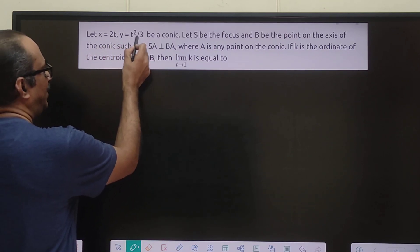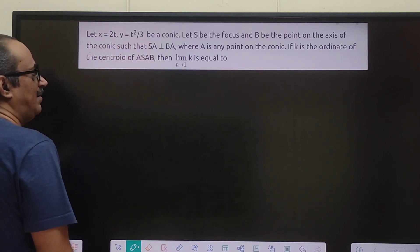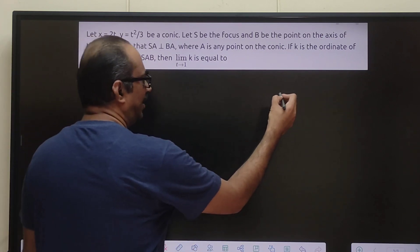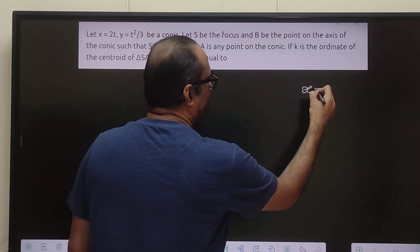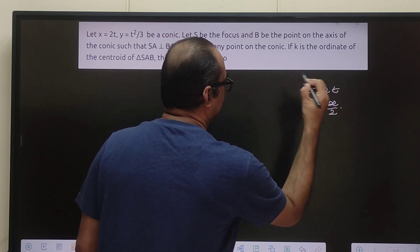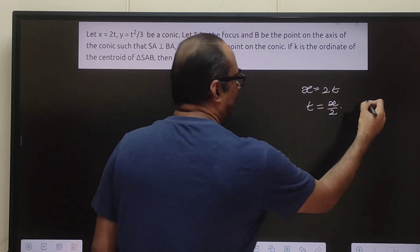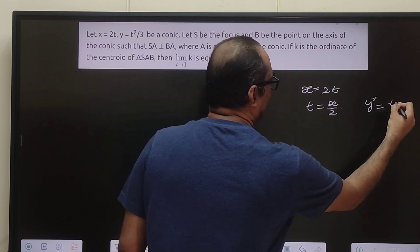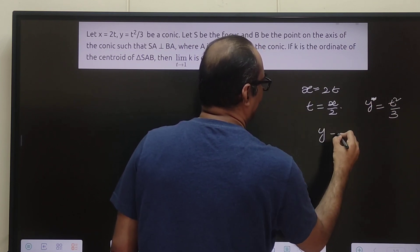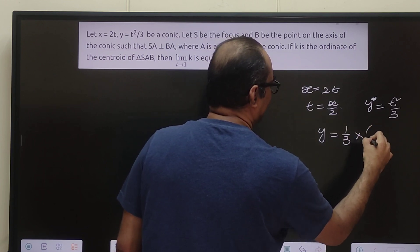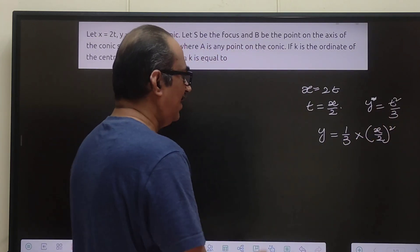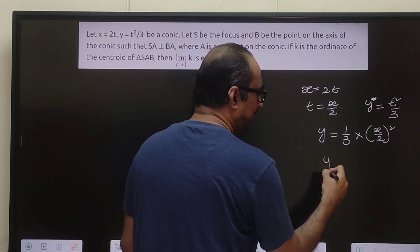We have been given x = 2t, y = t²/3 be a conic. First let's understand what is this conic. Seems to be a parabola. So first we will check that. x = 2t means t = x/2, and we have y = t²/3. That means I can write (1/3)·(x/2)². Now when we simplify this, what are we getting?